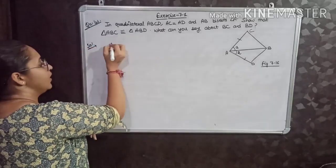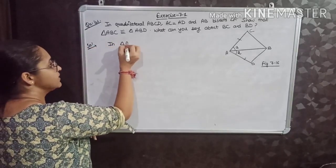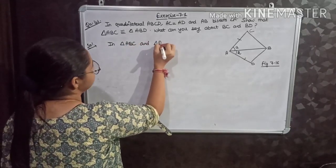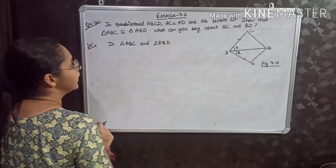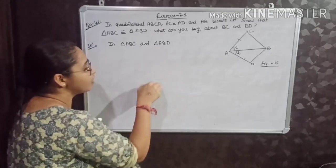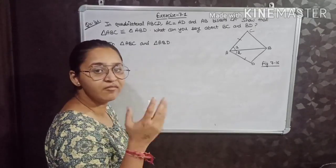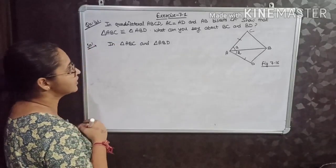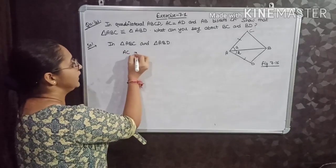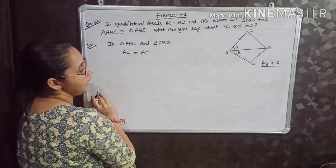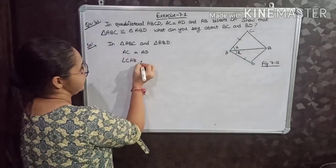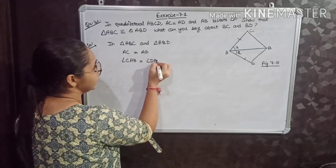In triangle ABC and triangle ABD, first I will write what the given conditions are. The given information is: AC is equal to AD, and angle CAB is equal to angle DAB.